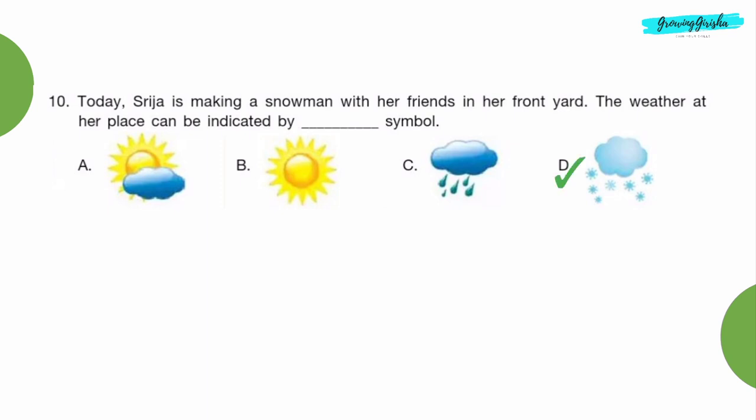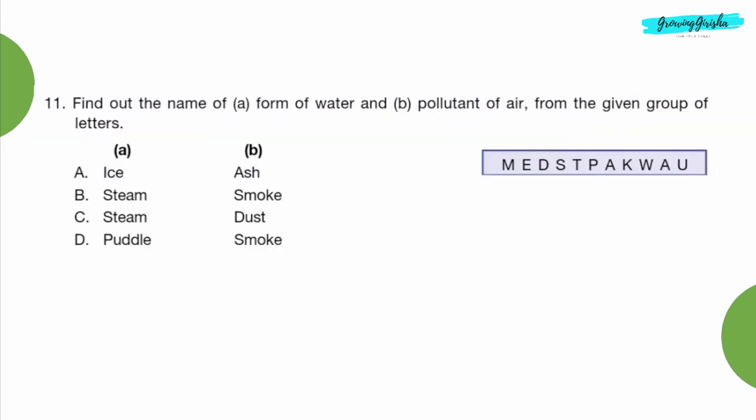Question 11: Find out the names of A, form of water, and B, pollutant of air, from the given group of letters. Option C, steam and dust.